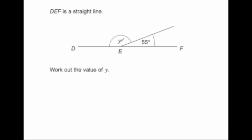And there's two angles that make up that straight line. You've got your y and your 55 degrees. And the question says work out the value of y. So what we just need to do is take our 55 degrees away from 180. So we're going to do 180 subtract 55.